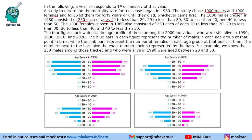So there are 4 age groups: 10 to 20, 20 to 30, 30 to 40, and 40 to 50. The 1000 females chosen in 1980 also consisted of 250 each — 250 in each of these age categories, both for male as well as female.